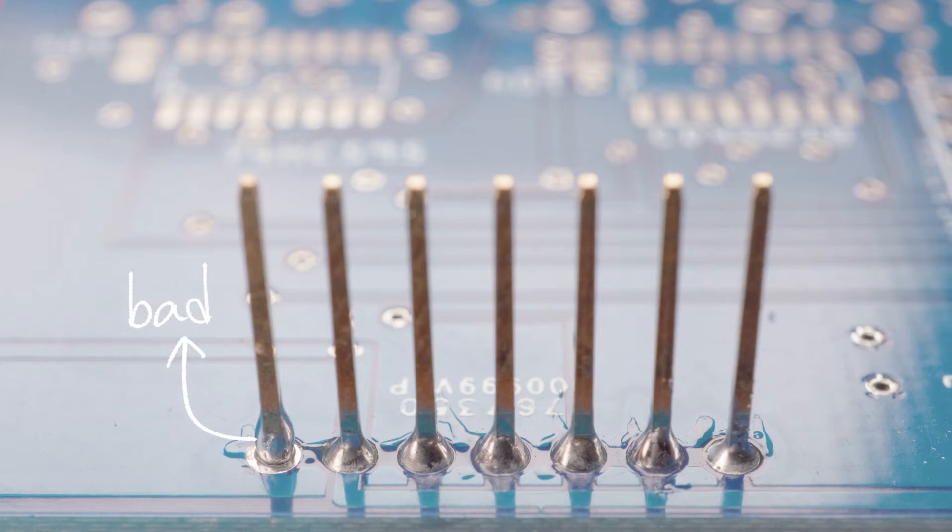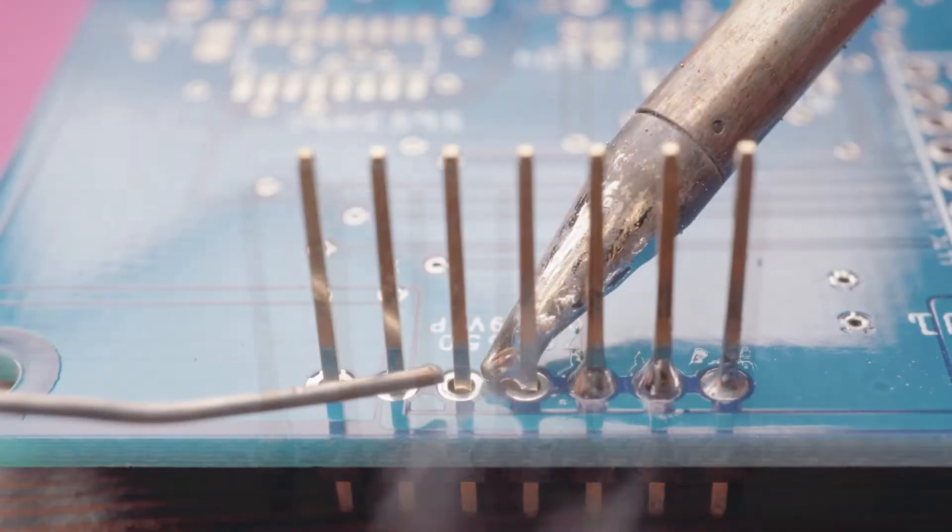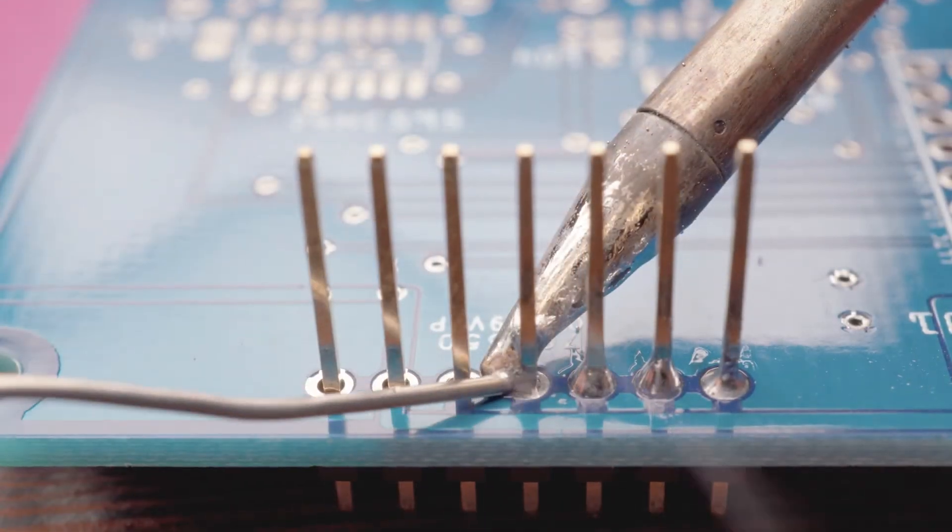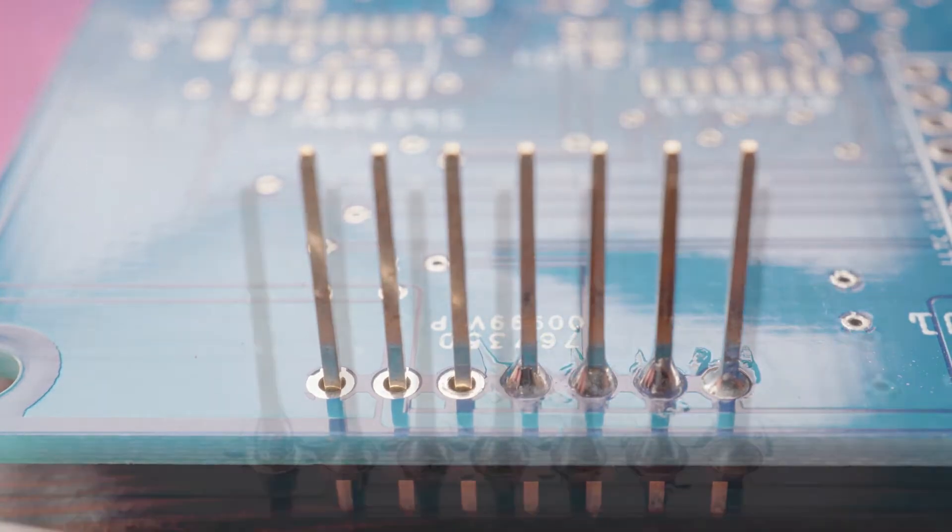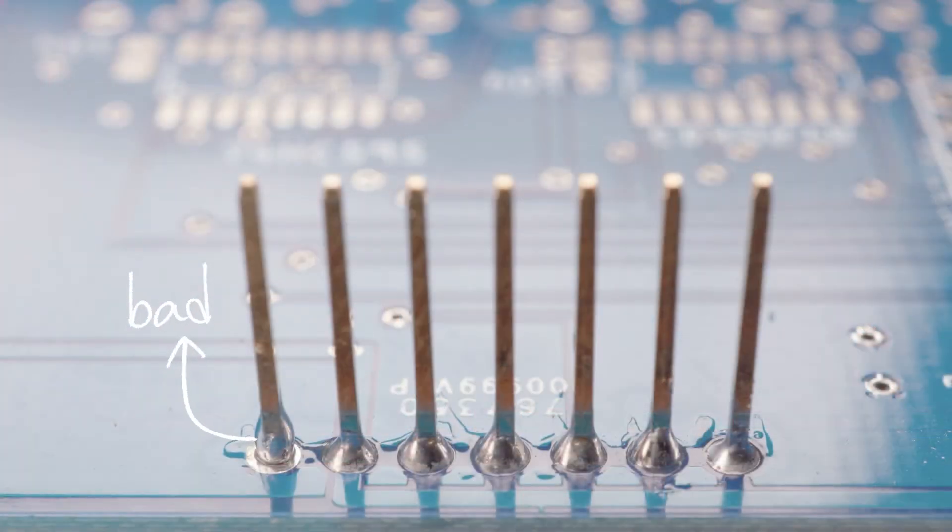Now, when you look at the other joints that have been soldered on this component, you see a nice tent that formed on each of the legs of this component. And it's really just this one side that doesn't have that. And that's just because that solder just didn't flow down that through-hole.